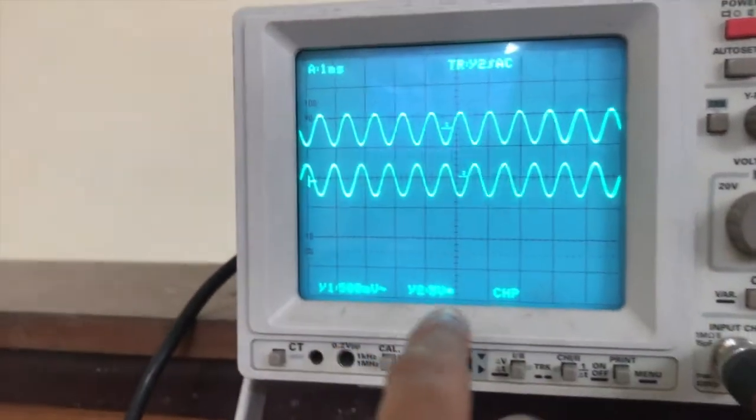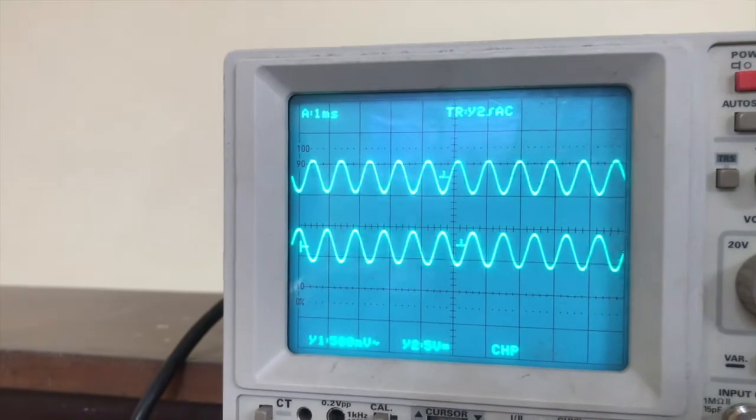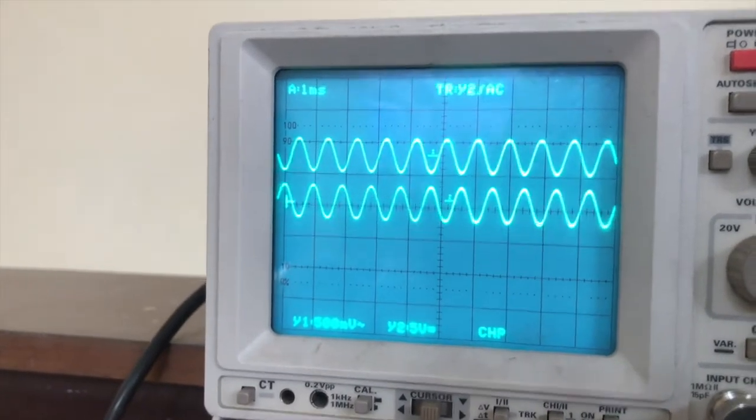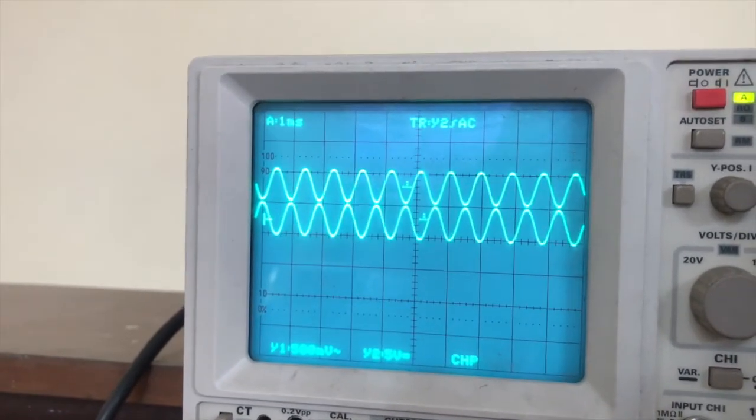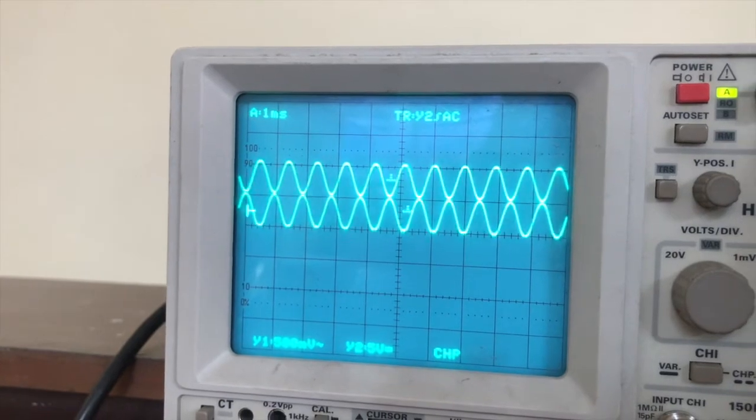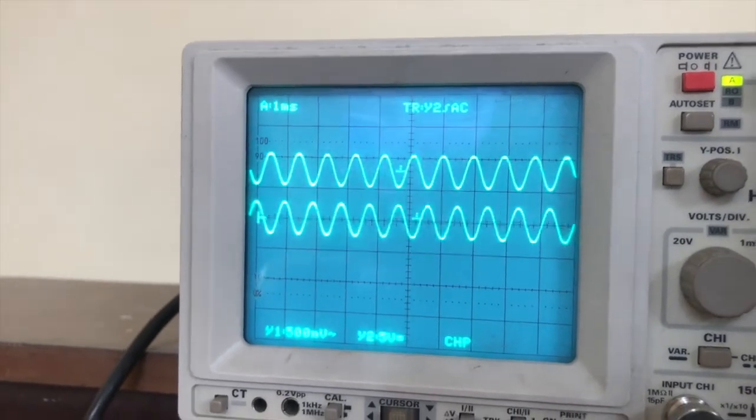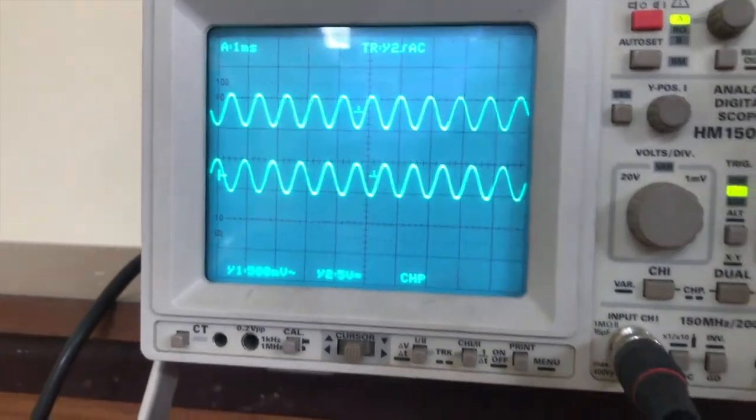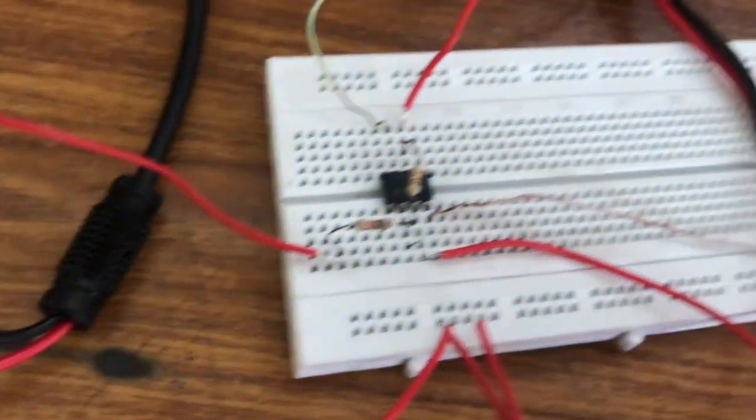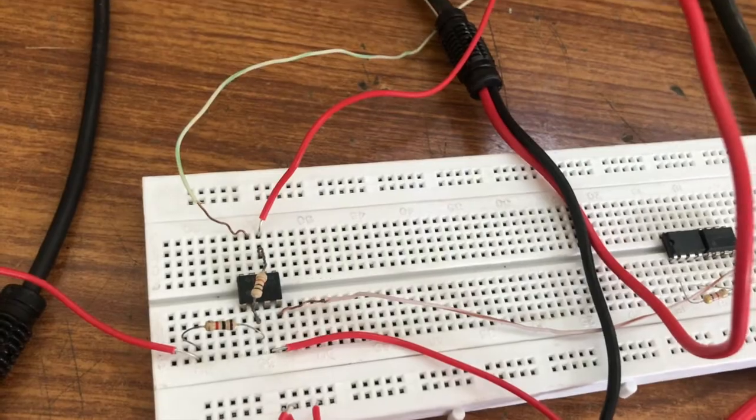And the second channel of the CRO is set to 5 volts per division. So it is occupying one division here. And it is inverted also. The output waveform is inversion of the input waveform. And it is giving us a gain of 10, 5 volts by 500 millivolts.